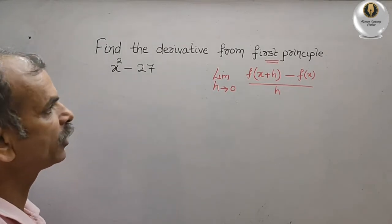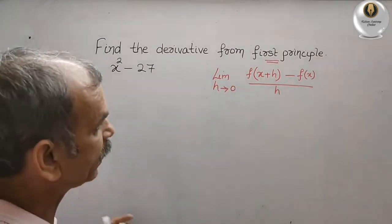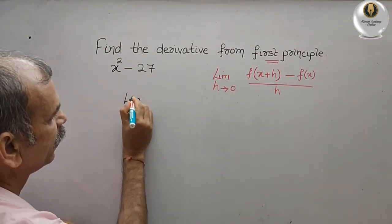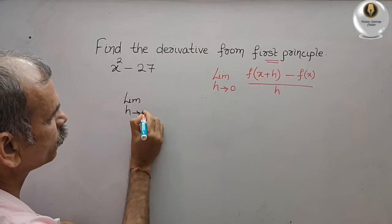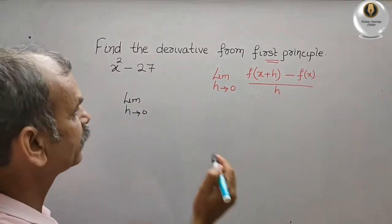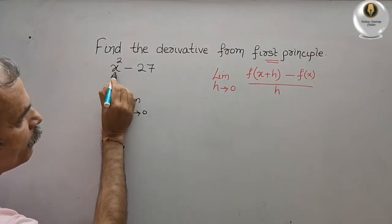Just we will try to write in this form. Then what we will get: limit h tends to 0, and here they have given f of x plus h. That means here in place of x, we have to write x plus h.